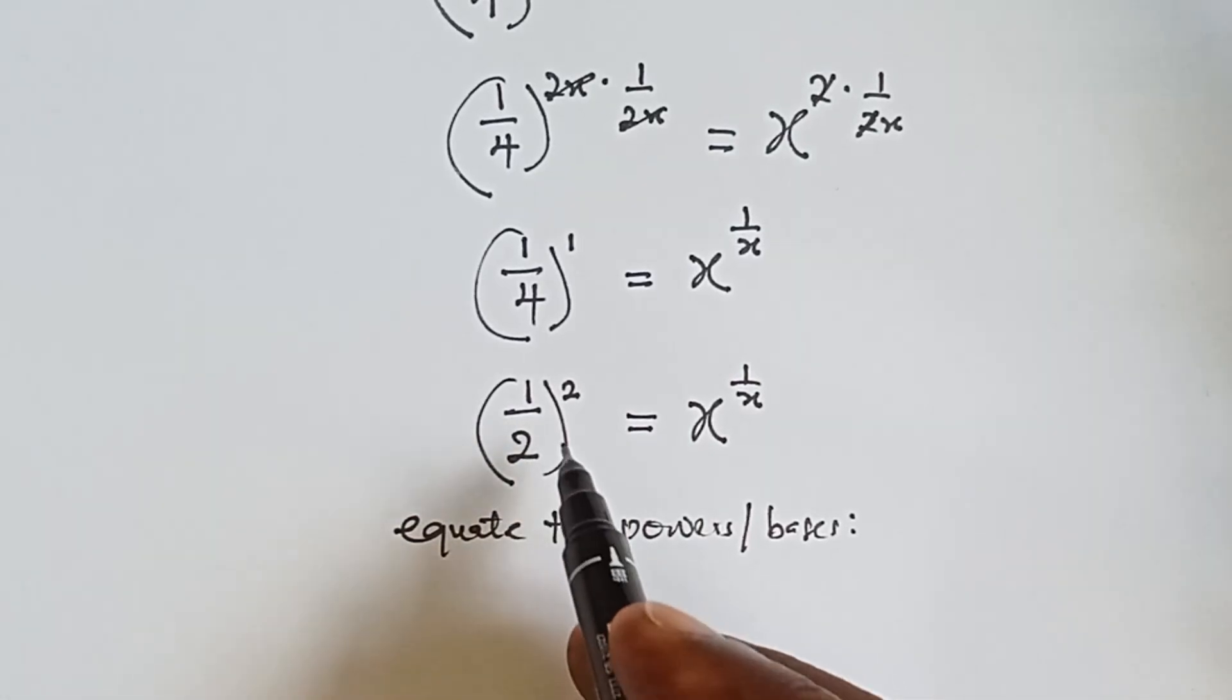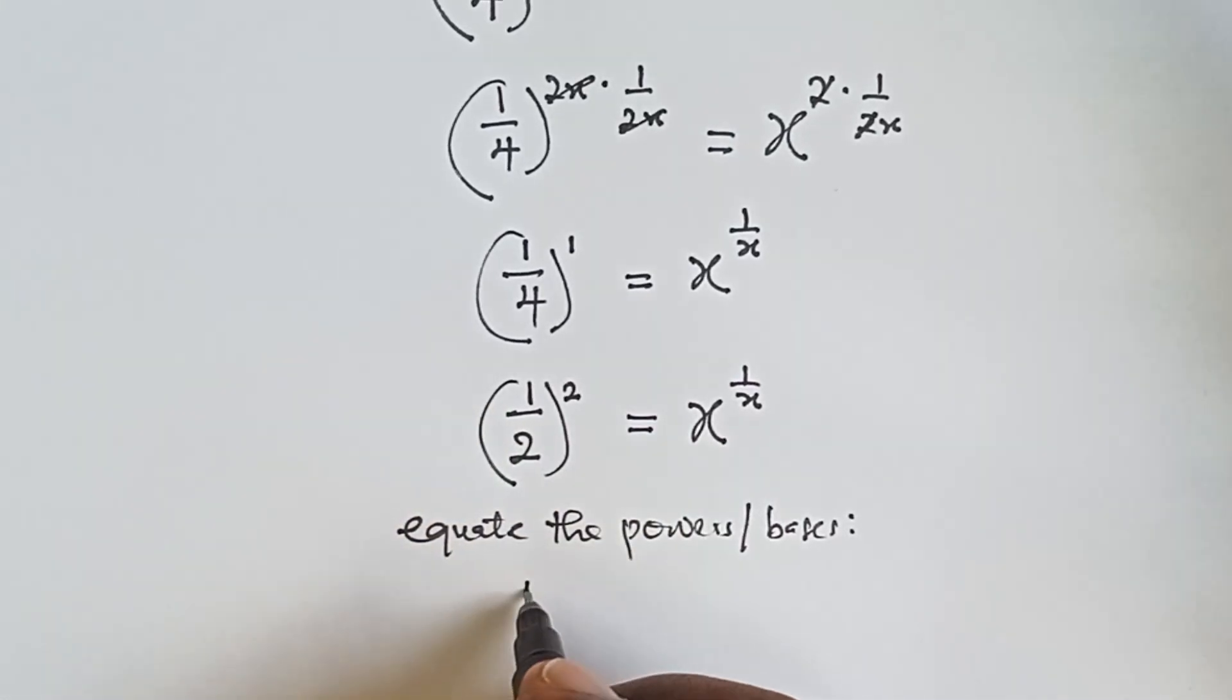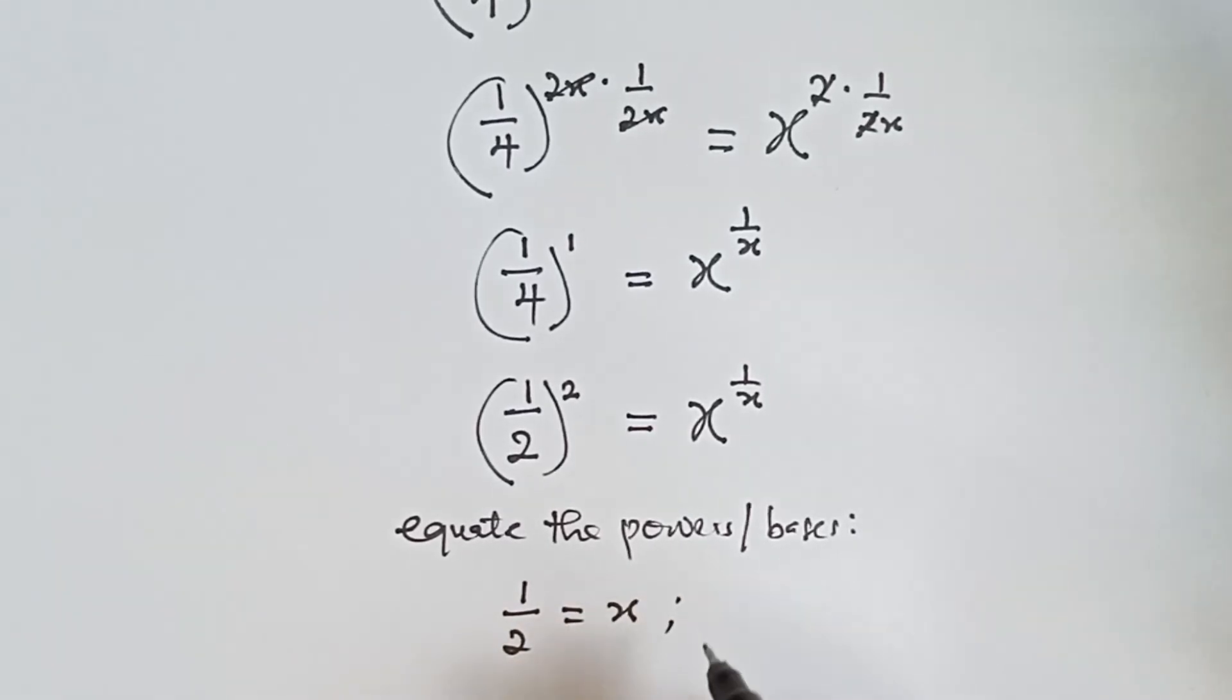When we equate the bases, that is 1 over 2 equals to x. And then when we equate the powers, we have 2 equals to 1 over x.